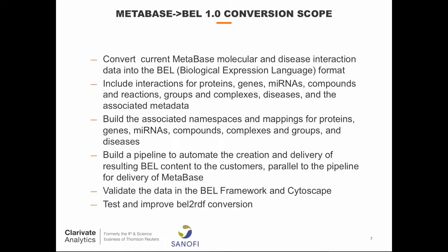The scope, from my perspective — I am the project lead on all of our BEL efforts within Clarivate — was to convert as much of Metabase as we could, which includes interactions, proteins, genes, microRNAs, compounds, reactions, groups, complexes, diseases, and all of the associated metadata. Some namespace building also had to be done. BEL does come with pre-built namespaces, but when you have a proprietary data source, you need to extend them. That actually demonstrates that it's quite easy to extend namespaces, and there's a provision for providing customized namespaces — for example, complexes and groups, which are unique to Metabase content.